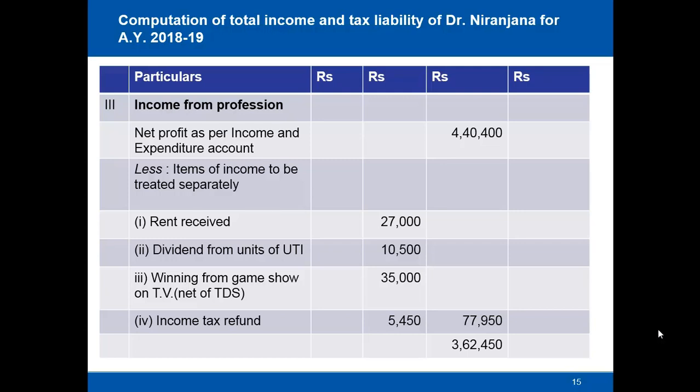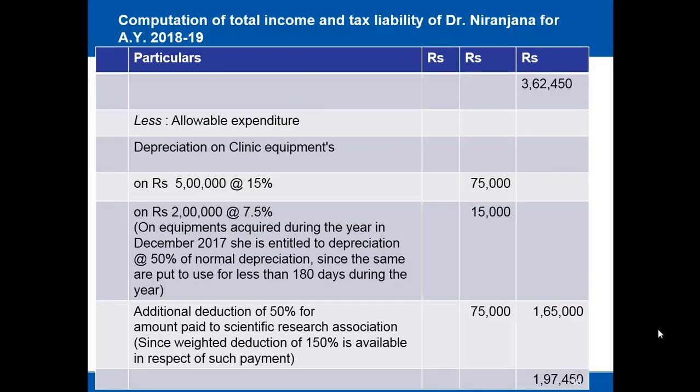Further deductions are allowed: depreciation at 15% on opening WDV of rupees 5 lakhs gives rupees 75,000. On the rupees 2 lakhs of equipment acquired in December 2017, since it was put to use for less than 180 days, depreciation is allowed at 50% of the normal rate, giving rupees 15,000. An additional 50% deduction is allowed on the rupees 1 lakh 50 thousand paid to the scientific research association under section 35 (weighted deduction of 150%), giving rupees 75,000. Total deductions amount to rupees 1 lakh 65 thousand, reducing income from profession to rupees 1 lakh 97 thousand 450.